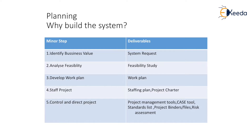In the planning phase, first we ask the question: why we build the system. On the basis of that, some minor steps we have to decide, like identifying the business value. So if we identify what the business value is, on the basis of that we will get some system requirements. Second, we have to analyze the feasibility of a model — like how it is feasible for our future market, so we have to do the feasibility study. Third is the development work plan — we have to develop a work plan for what we are actually going to do, how it is going to perform, and in the deliverable we will follow the work plan for the model.